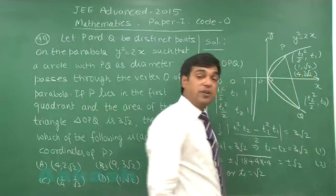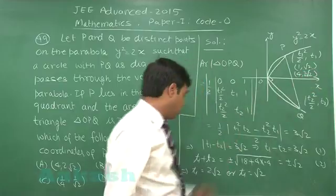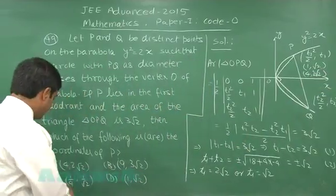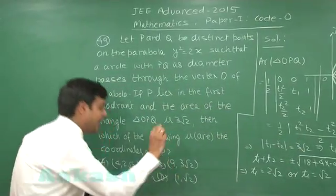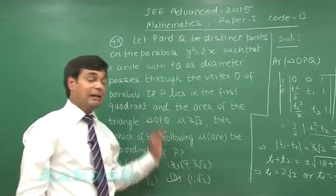So, there are two possibilities for this question. One is 1 comma root 2, other is 4 comma 2 root 2. Looking at the given options, we see option a and d are correct. So, this was solution for the question. Let us move to the next one that is question number 50.